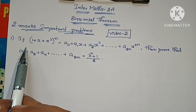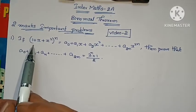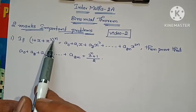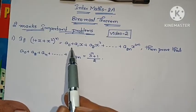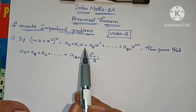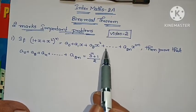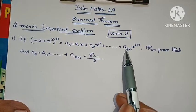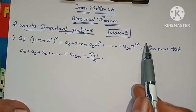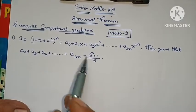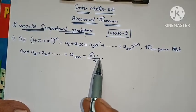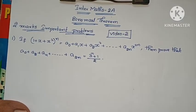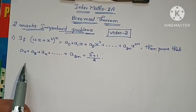The first problem: If (1 + x + x²) whole power n equals a₀ + a₁x + a₂x² + and so on + a₂ₙ x power 2n, then prove that a₀ + a₂ + a₄ + ... + a₂ₙ equals (3^n + 1) by 2.